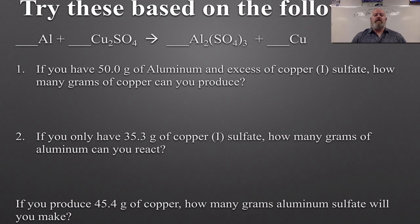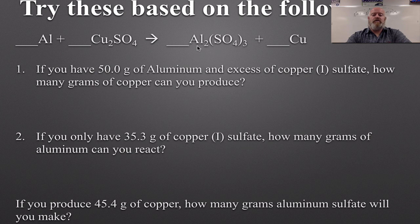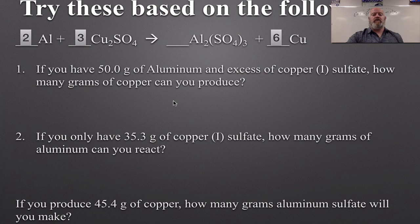Let's do another practice problem. We have 50 grams of aluminum and an excess of copper(I) sulfate — as soon as I say 'excess of copper sulfate,' ignore it. How many grams of copper can you make? We need to balance the equation: with one aluminum, two aluminums, two coppers, three sulfates, and one sulfate, we need a 3 in front of CuSO₄, a 6 in front of Cu, and a 2 in front of Al to balance it out.